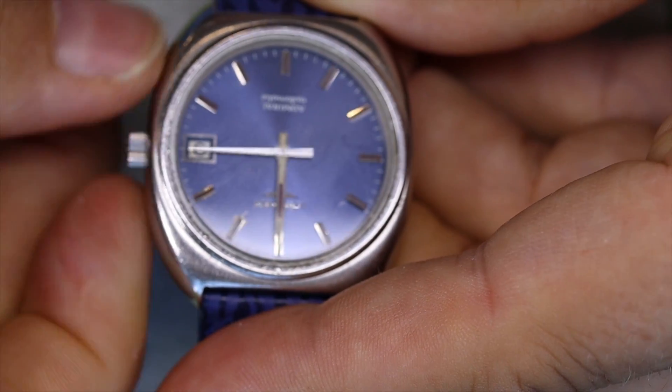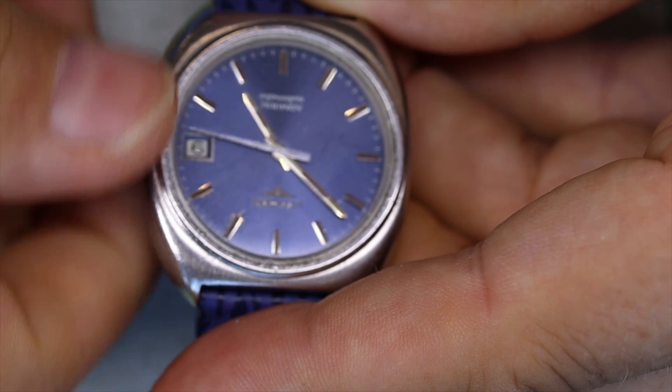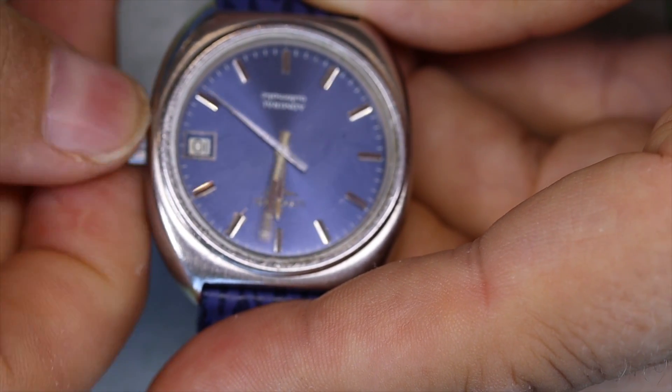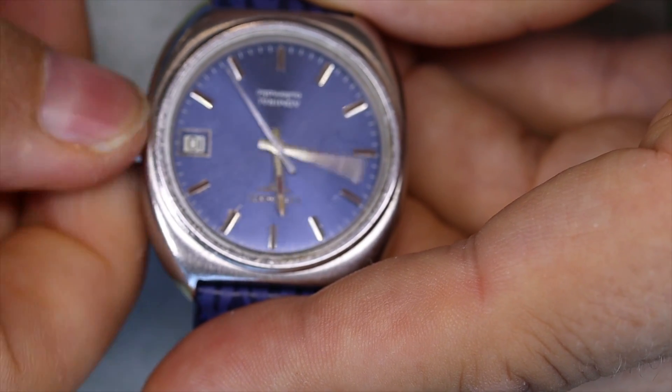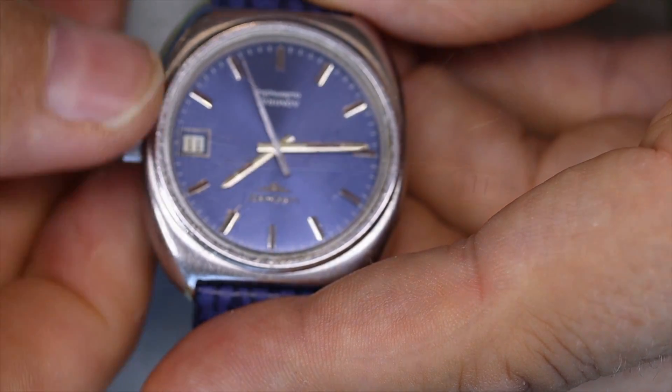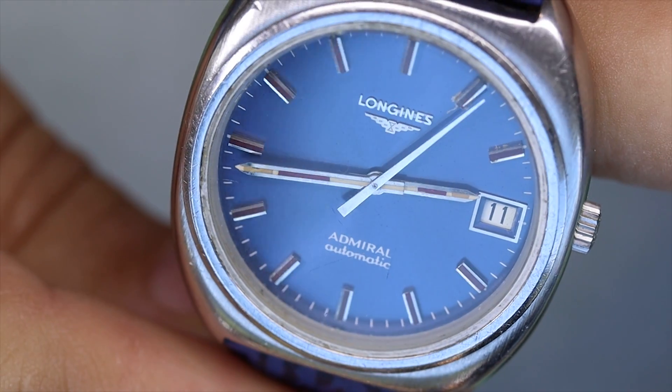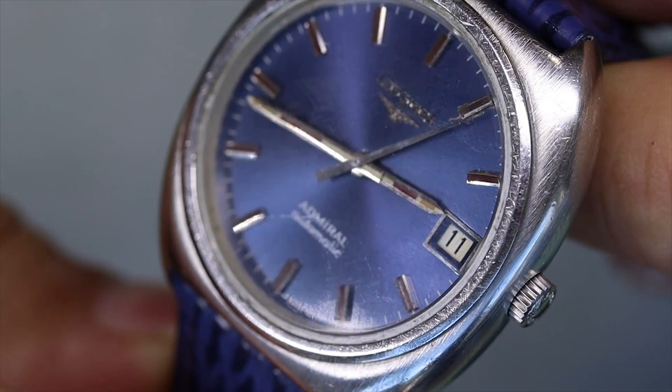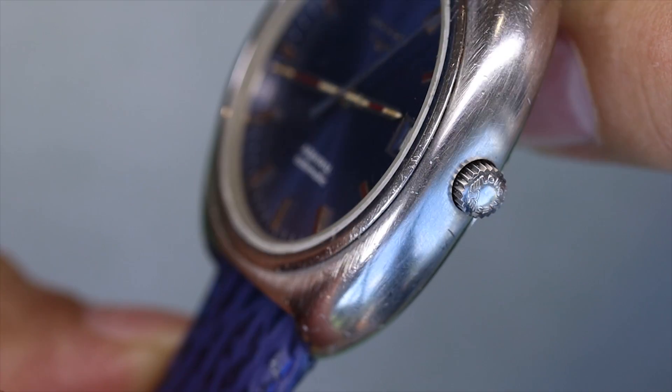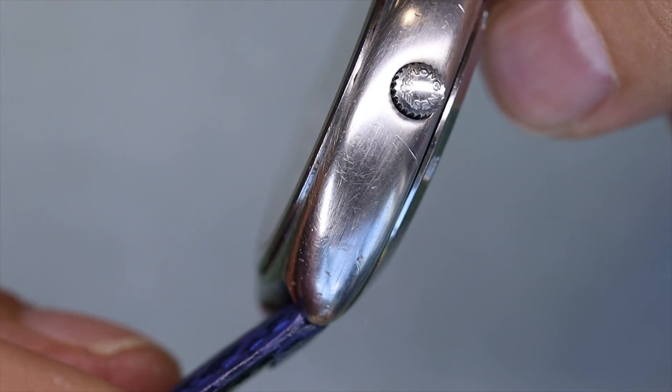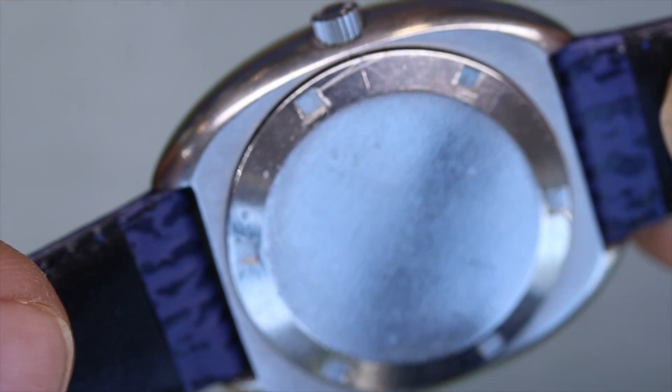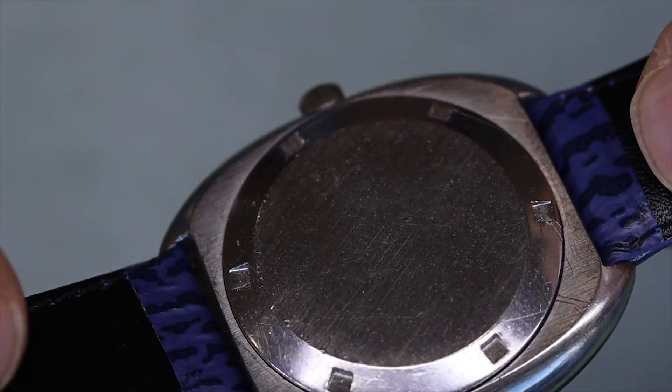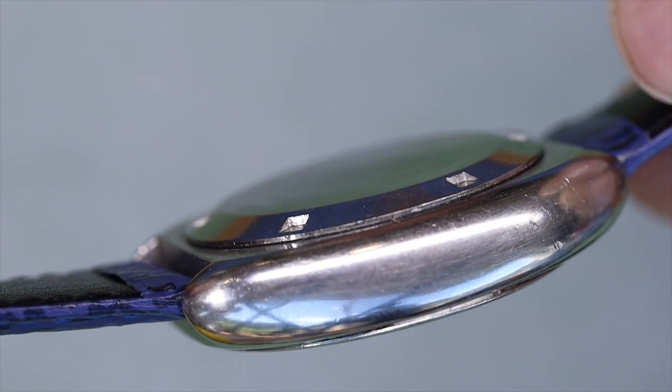First thing we see however is that the watch is very reluctant to run. It runs for like a couple of seconds and then it stops, but the rest of the functions work. For the case, we see it's pretty beaten up and it should be brushed but it's kind of polished. The mineral glass has quite some scratches in it so we're gonna see what to do about that as well.